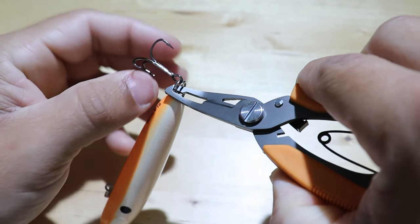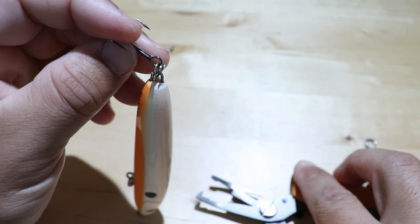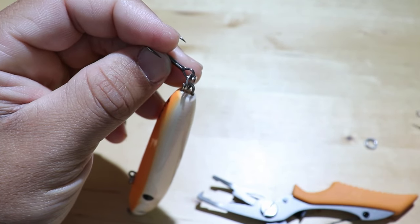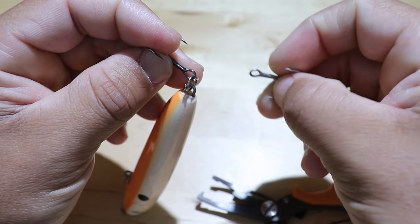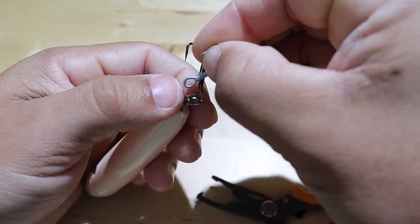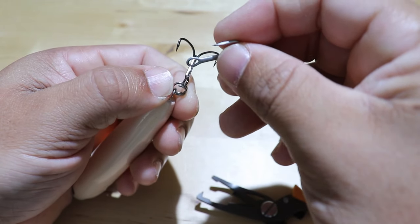Now right here before I actually take the hook off, since that opening is already started, I like to take the other hook that I'm going to replace it with and go ahead and start it on there as well. That way you can kind of kill two birds with one stone - you can get one hook off as you put one on.